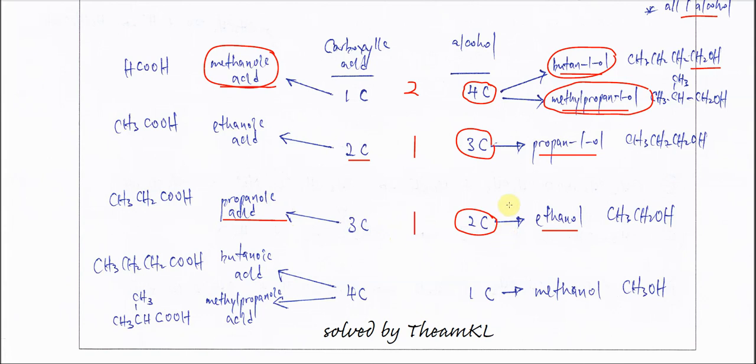If now we use 1-carbon alcohol, which is methanol, the carboxylic acid must be 4-carbon. 4-carbon carboxylic acid can be butanoic acid or methylpropanoic acid. Okay, this and this.